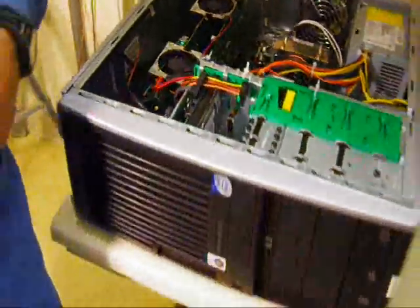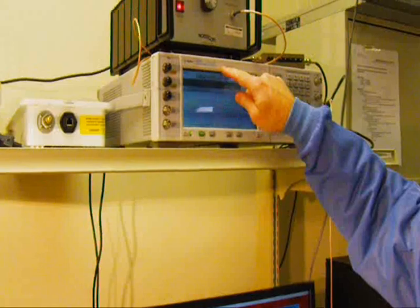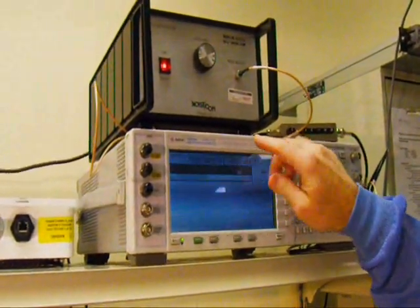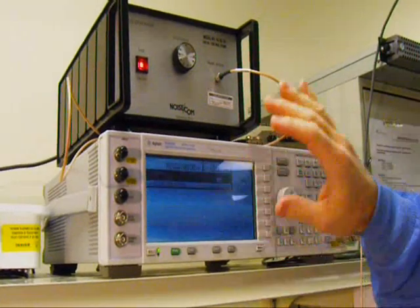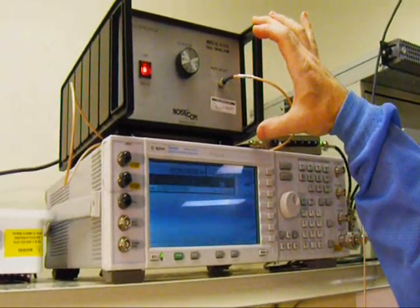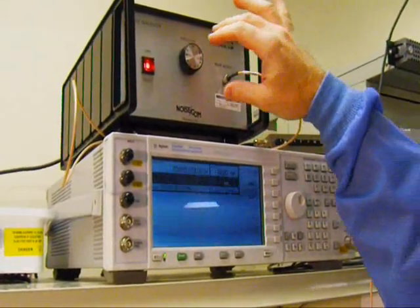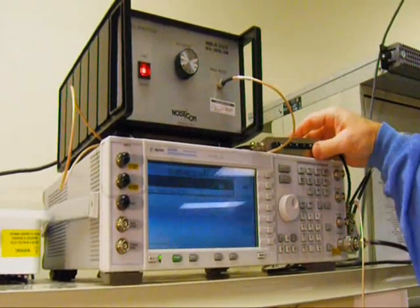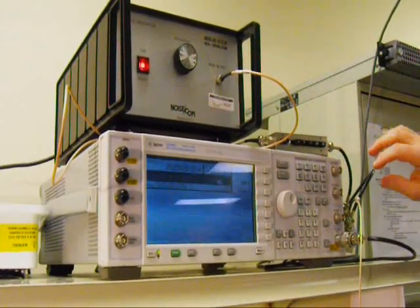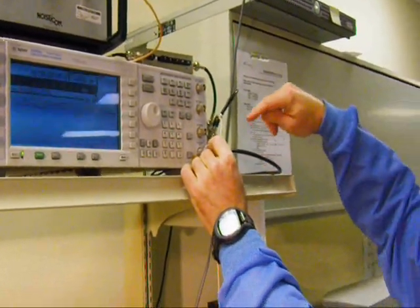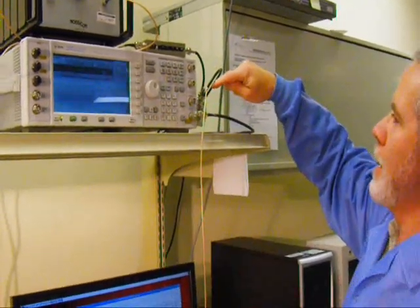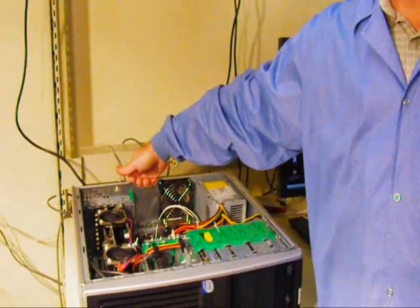The signal that we're putting into that is a 70 megahertz IF signal, which is coming from this vector signal generator. We're also combining that with a noise source from noise comm. The noise is going through this attenuator, and it's being combined with the signal from the signal generator in this combiner. That goes through this wire into the input of the SDR2010.